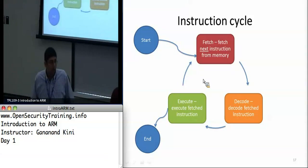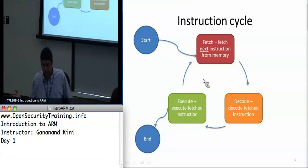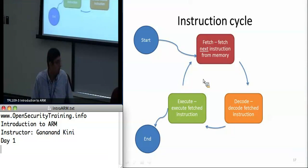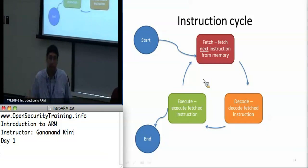The processor has three things it does in its instruction cycle: it fetches the instruction, decodes it, and then executes it. This ties into a unique ARM feature called pipelining, which allows you to queue up multiple instructions. While executing one instruction, it can in parallel be decoding another, and in parallel fetching the next. So you can queue up instructions — we'll see the advantages and disadvantages of that later. But for now, it's just fetch, decode, and execute.